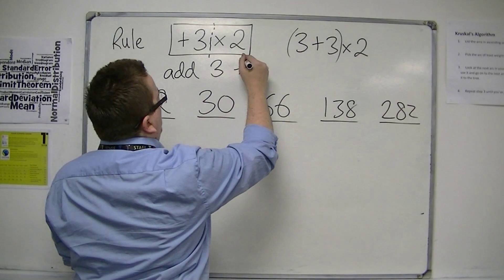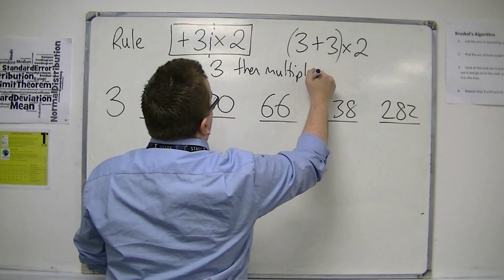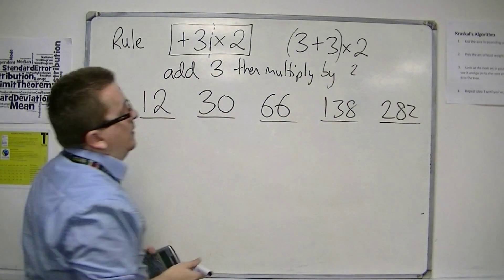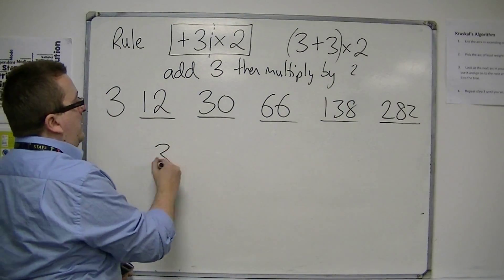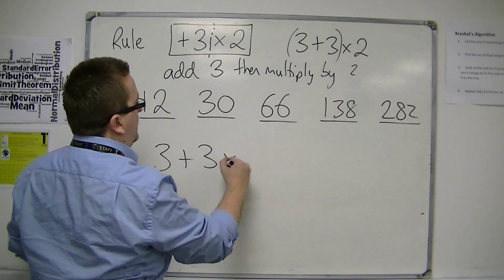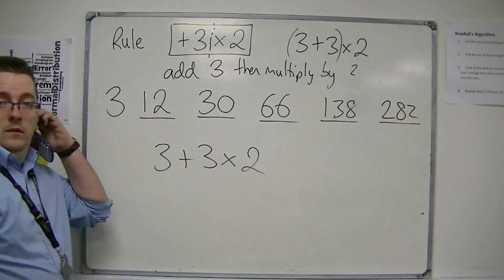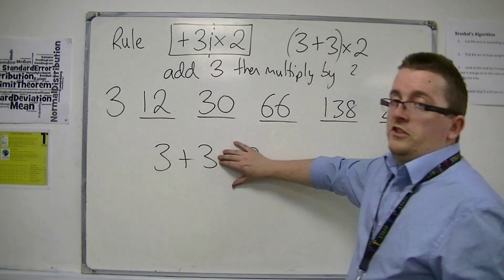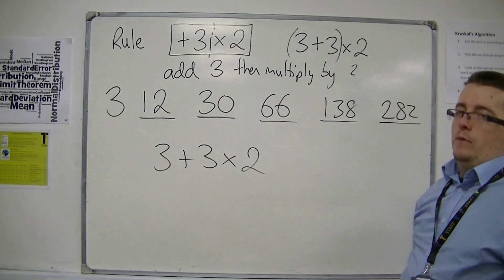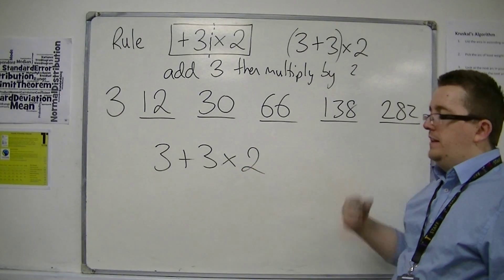Add 3, then multiply by 2. But you could still have made the error of plugging it straight into your calculator. So be aware of this. Do the 3 plus 3 first, press equals, and then multiply by 2, and then keep going.